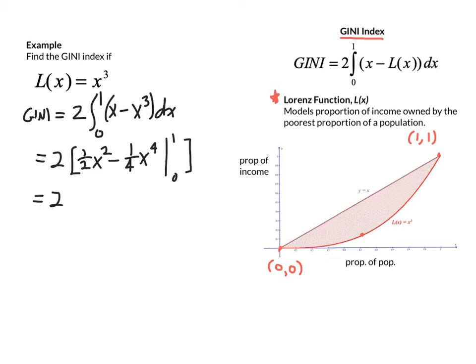So we use our fundamental theorem, upper minus lower. So we have 2 times 1 half minus 1 fourth, the anti-derivative at 1, minus 0, the anti-derivative at 0. So we end up there with a Gini index value of 2 times 1 fourth, or 1 half.